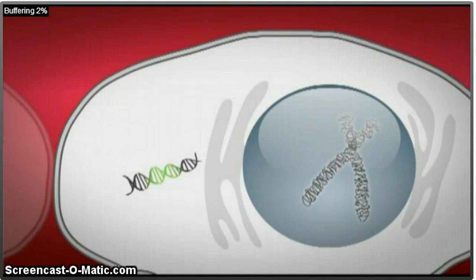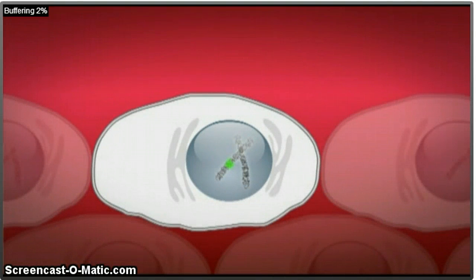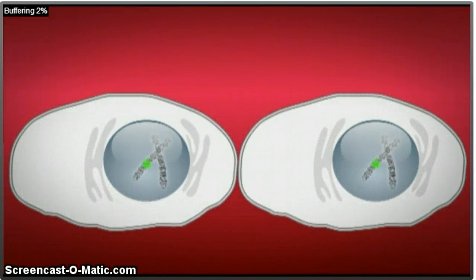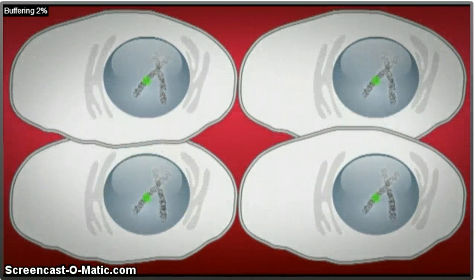Once retrotranscribed, the DNA with the therapeutic gene enters the nucleus where it integrates into the host cell genome. When integrated into the genome, cells arising from the infected cell will also contain the therapeutic gene, allowing for stable and long-term expression.